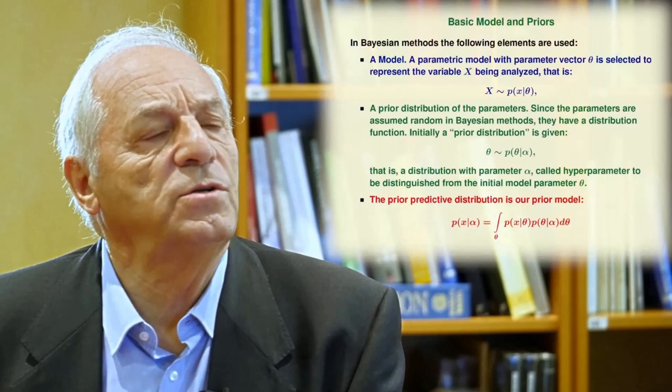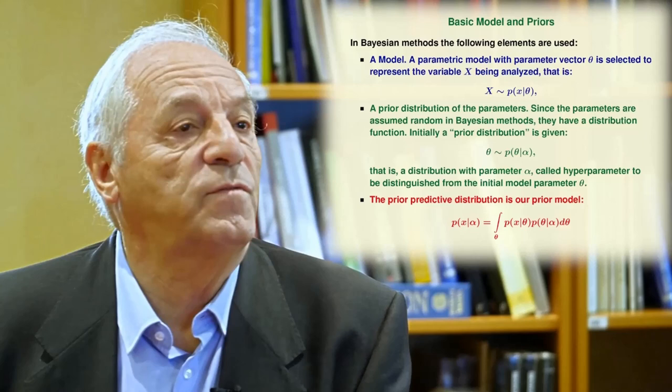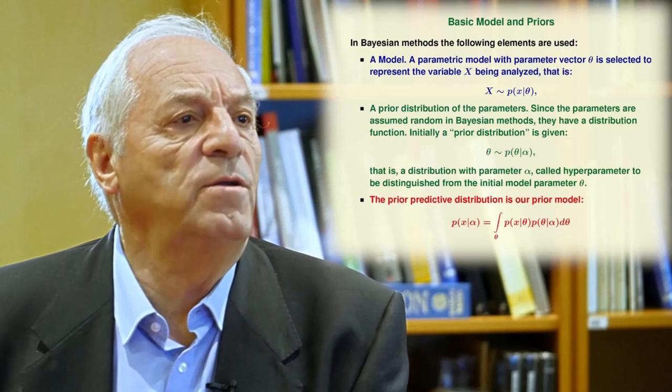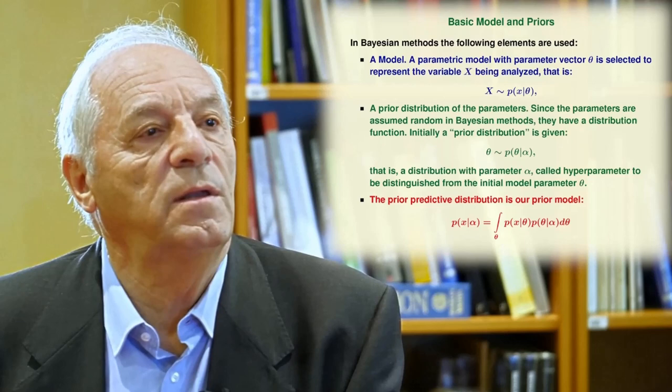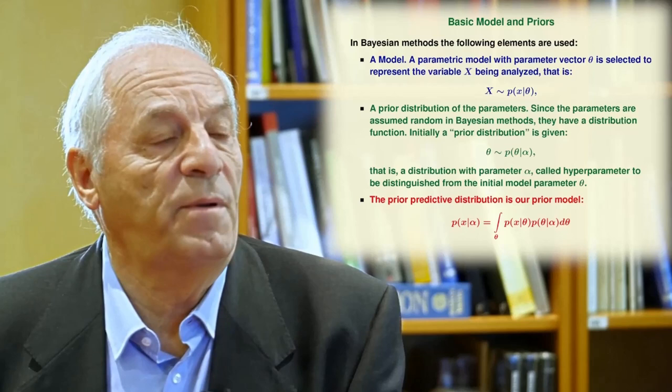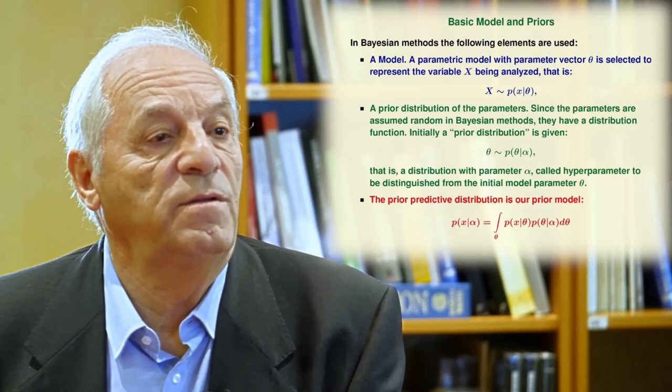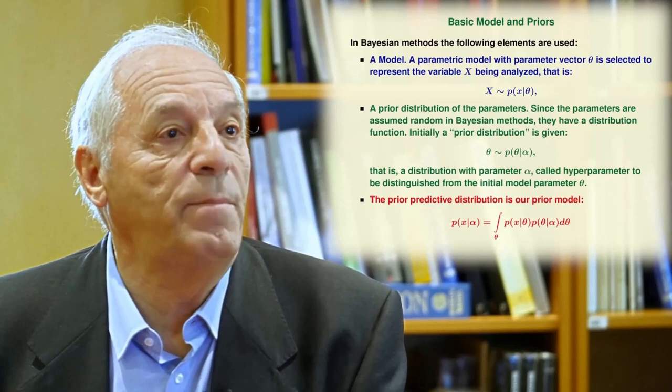To carry out this process, you have to apply the formulas that we explain. We explain in detail the basic elements of Bayesian methods. First, we describe a model — we need a parametric model that depends on some parameters, the vector theta. Then we need to define the prior distribution of the parameters. With the prior and with the model, combining them as a linear convex combination by means of an integral, you can obtain the prior predictive distribution, which is the model we will use if we do not have samples.